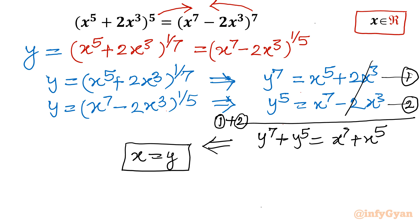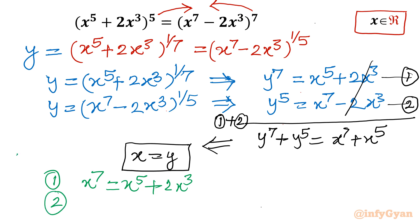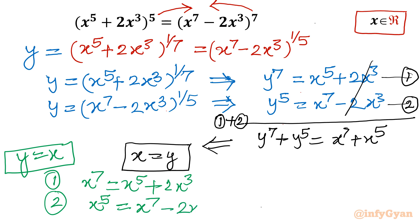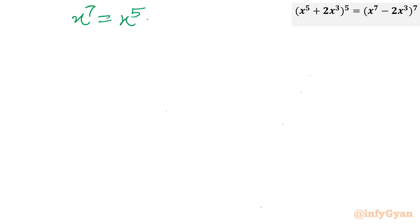So let us put y = x back into equations 1 and 2. Equation 1 becomes x⁷ = x⁵ + 2x³, and equation 2 becomes x⁵ = x⁷ - 2x³. Both equations are identical — only the sides are shifted. So we consider equation 1: x⁷ = x⁵ + 2x³.